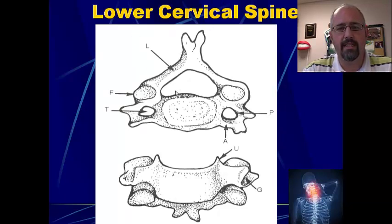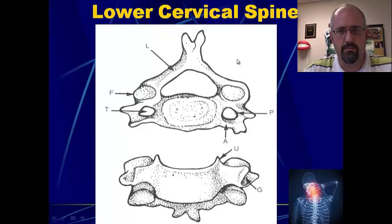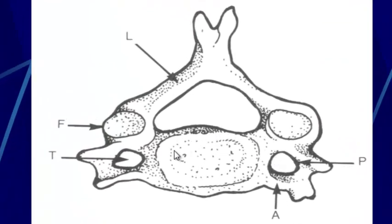Looking at the lower cervical spine — this kind of uniform, standardized sort of shape of the vertebrae. Right down here is the body of the vertebrae, and on the body we have our attachment location for the intervertebral disc. We then have our transverse processes out to the side, and we have a hole here — a space — and this is different from the lumbar and the thoracic because it doesn't exist down there. This is the transverse foramen, where the vertebral artery passes on either side.